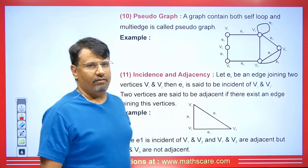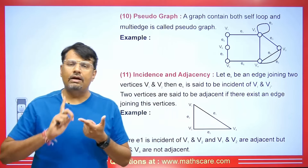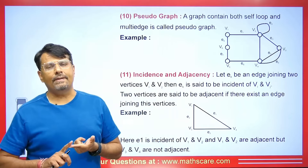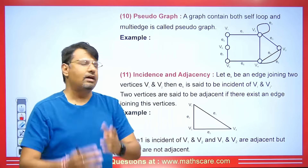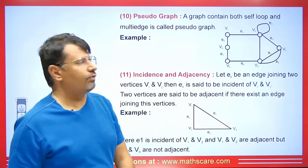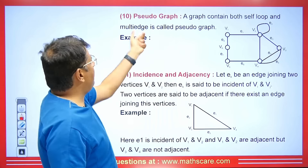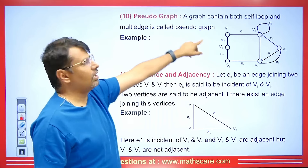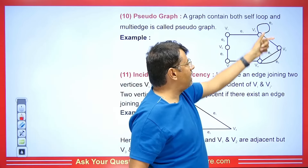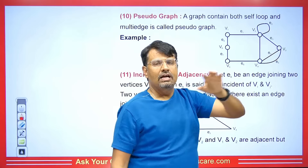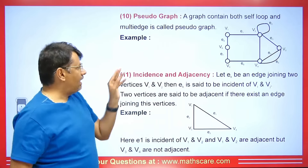Now let's talk about a pseudo-graph. A pseudo-graph is a graph that has both multi-edges and self-loops. Both are present together. A graph that contains both a self-loop and multi-edges is called a pseudo-graph. In this graph you can see there is a self-loop and there is also a multi-edge, so this type of graph is known as a pseudo-graph.